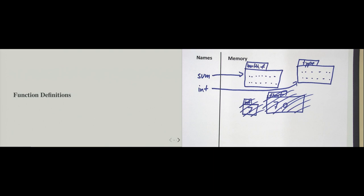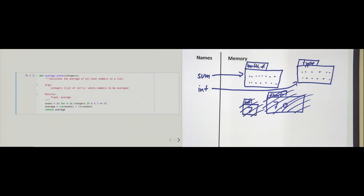Now let's look at a third example of what a callable is: so-called user-defined functions — functions that we create on our own. To show a familiar example, I will take the same code from chapter one where we had a list of numbers, first filtered for the even numbers, and then calculated the average.